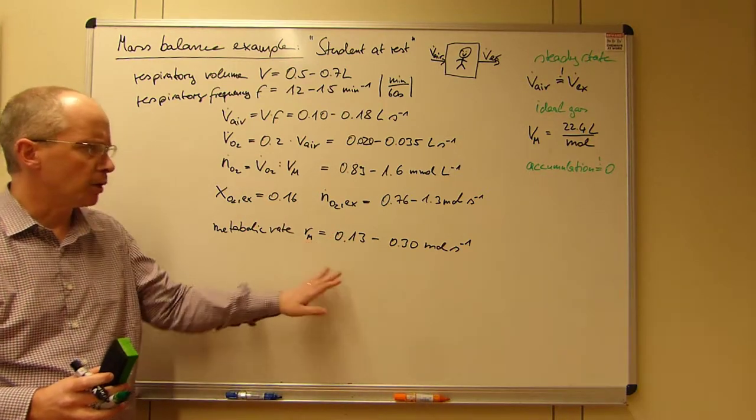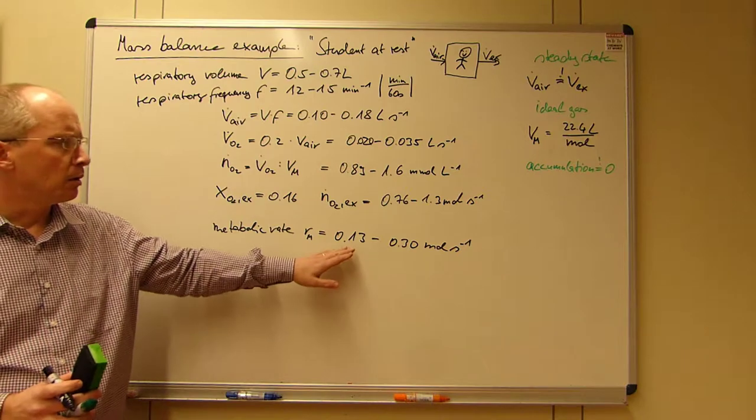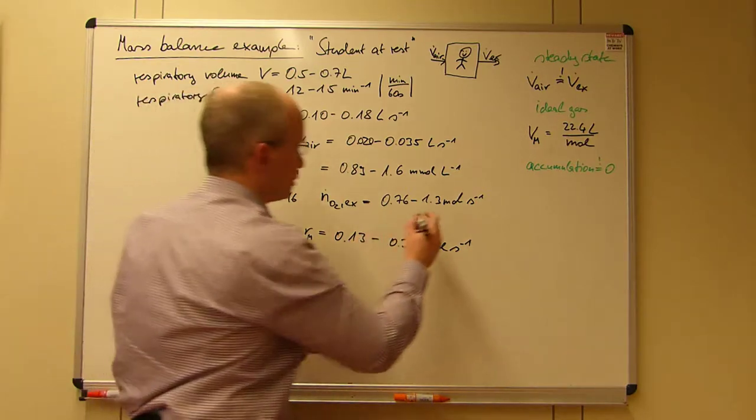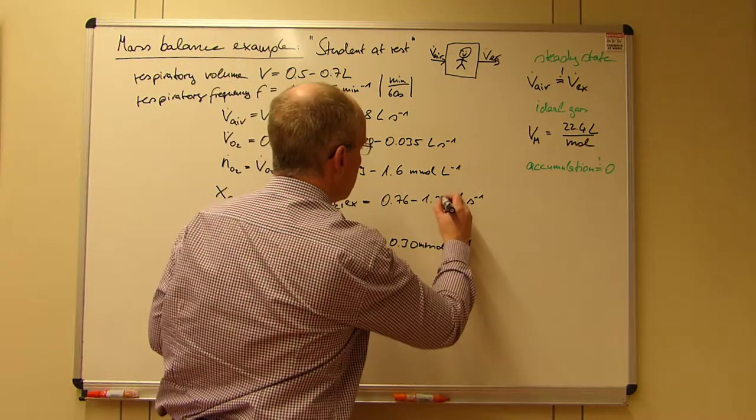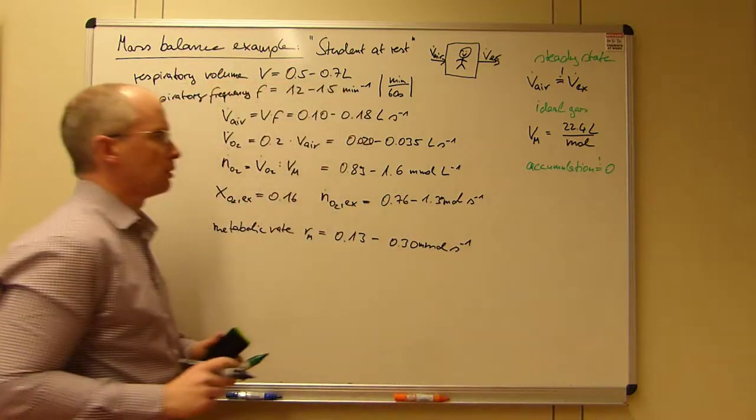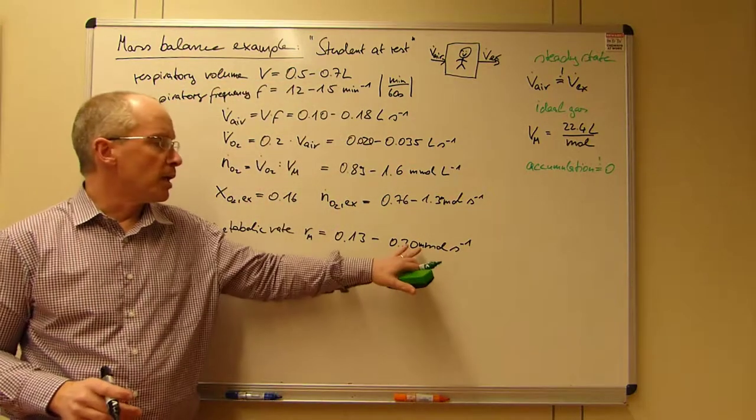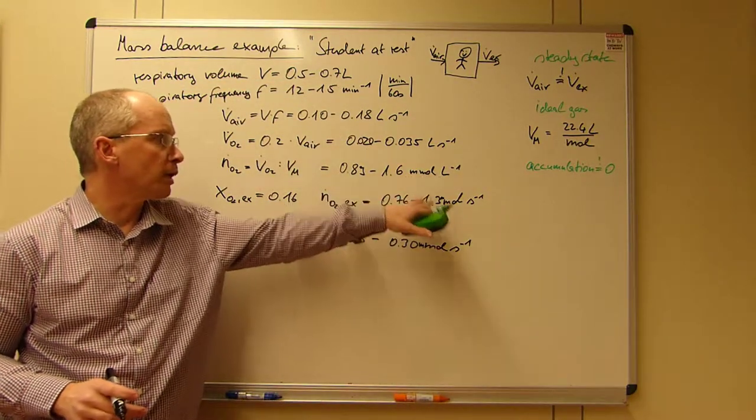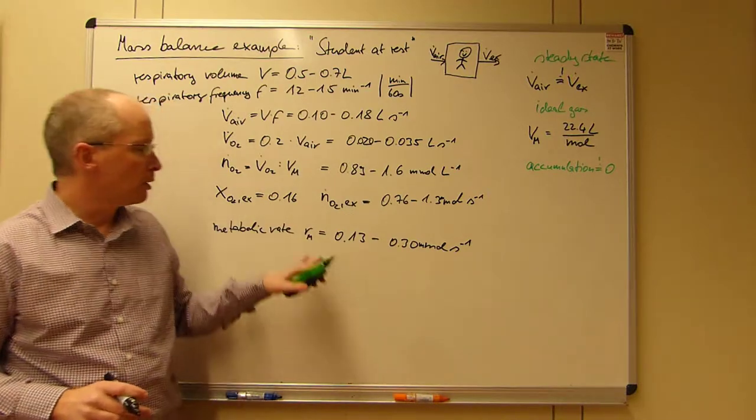So this is the metabolic rate of a student at rest. So far so good. So we know now that in the range of... this should be millimoles of course. I didn't carry this off properly.